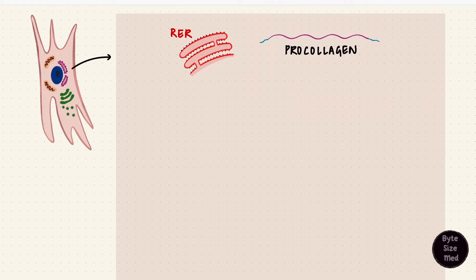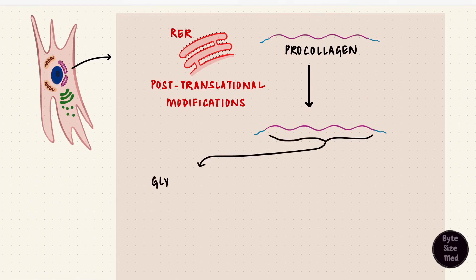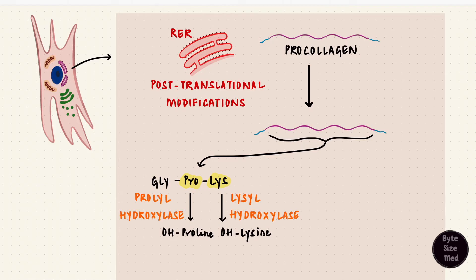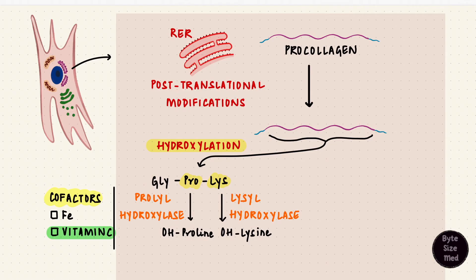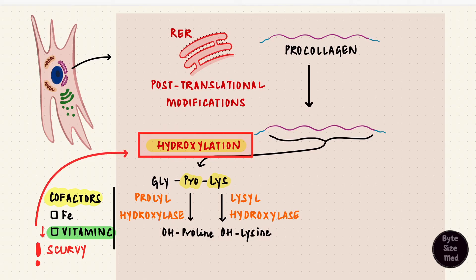In the rough endoplasmic reticulum, procollagen undergoes post-translational modifications. The central domain has the glycine-X-Y repeating sequence, and the accompanying amino acids — usually proline and lysine — get hydroxylated: proline to hydroxyproline and lysine to hydroxylysine. This hydroxylation is performed by prolyl hydroxylase and lysyl hydroxylase and needs cofactors like iron and vitamin C. An application here is scurvy, where there is a deficiency of vitamin C. Hydroxylation is required because hydroxyproline provides strength to collagen, so in scurvy, weaker collagen results in fragile capillaries, bleeding manifestations, and poor wound healing.